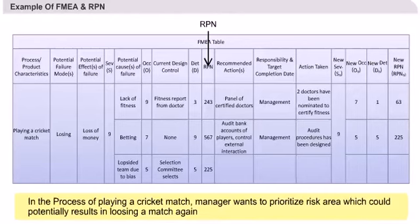Surely this is something the manager has to worry about. A focused observation will tell you that betting had the highest RPN because its detectability was very remote. The FMEA table does not end at RPN.